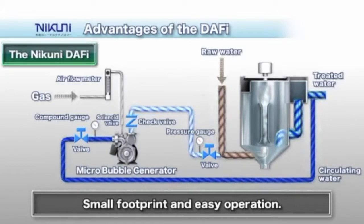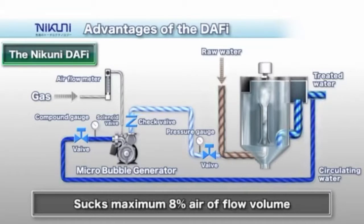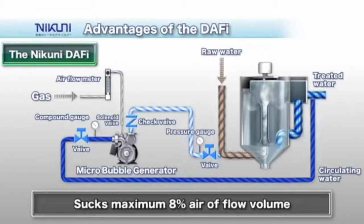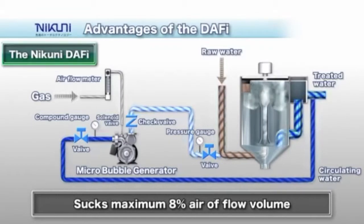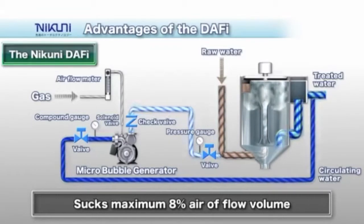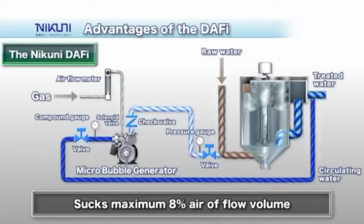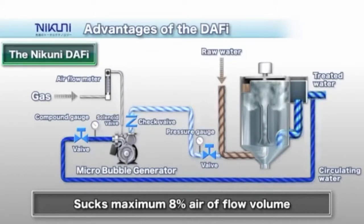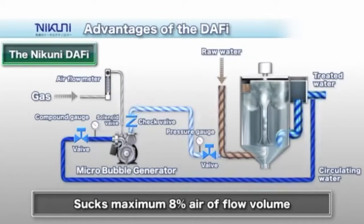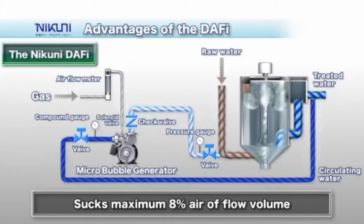A typical installation of the Nikuni KTM DAF pump integrates the micro bubble generator into your piping system. Air is then drawn into the pump through an inlet nozzle and controlled with a flow meter.